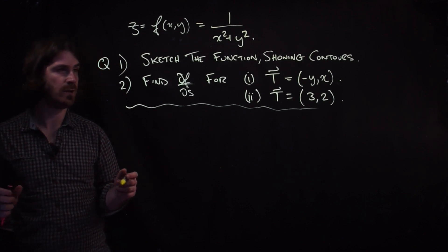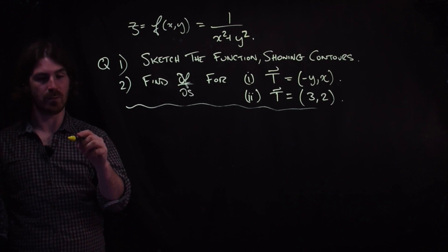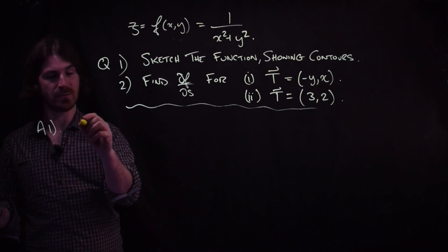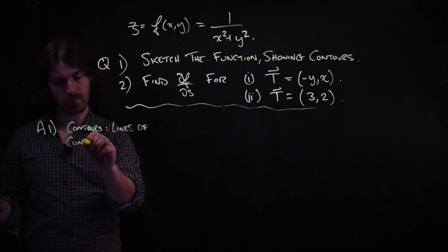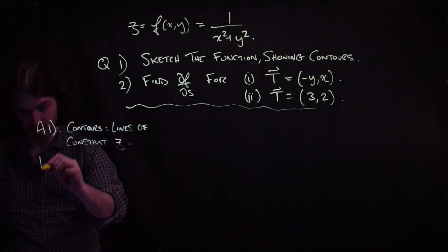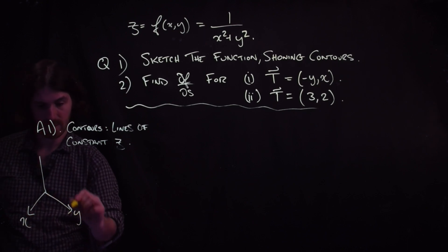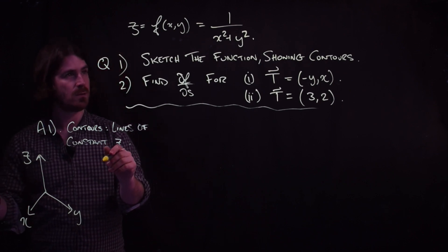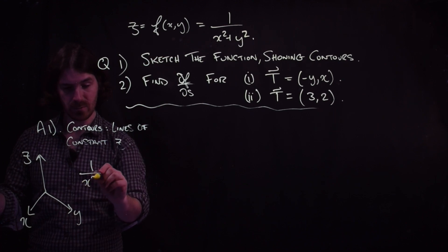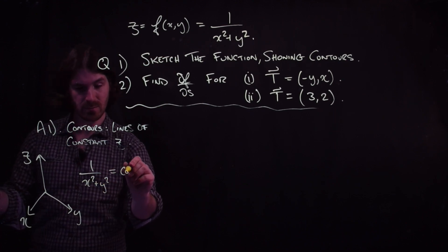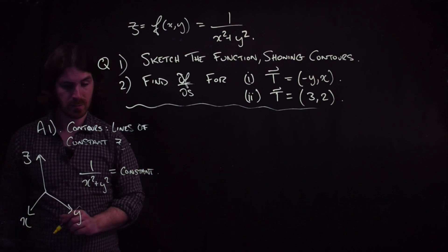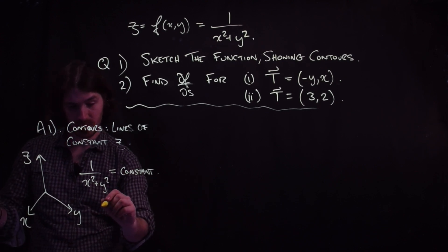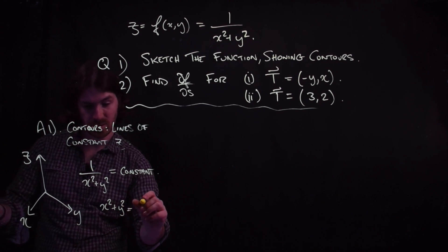How do we sketch the function? It's useful to think about the contours from the start. The contours are lines of constant z. So with our x, y, and z axes, we want to find lines of constant z. If z is 1 over x squared plus y squared and this is a constant, then we've got the equation of a circle, because x squared plus y squared equals a constant.